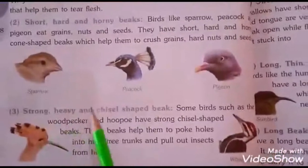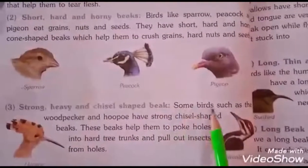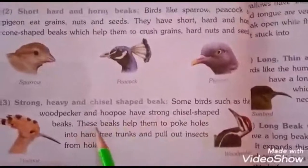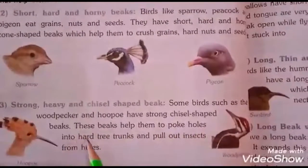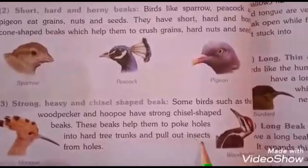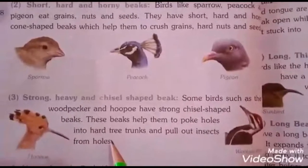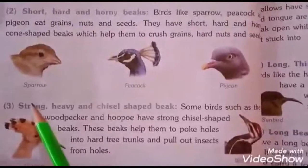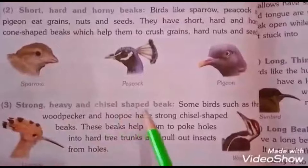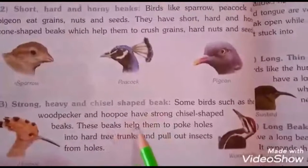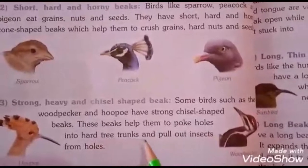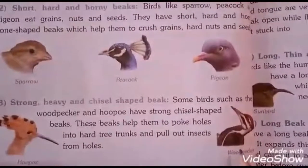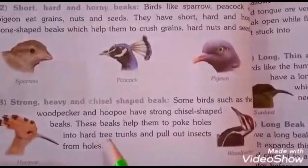The third type is the strong, heavy, and chisel-shaped beak. Birds such as the woodpecker and hoopoe have strong chisel-shaped beaks. These beaks help them to poke holes into hard tree trunks and pull out insects. I hope you have all seen a woodpecker poking holes into hard trees!